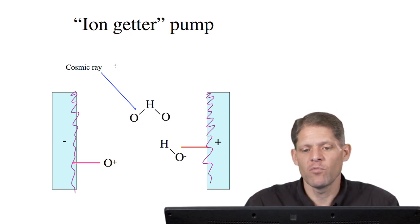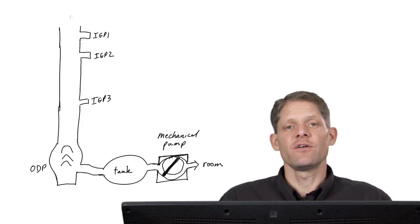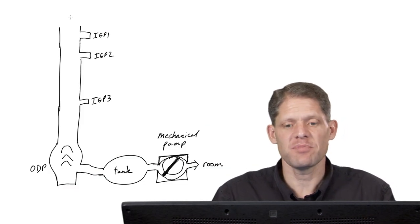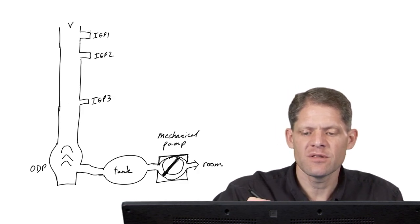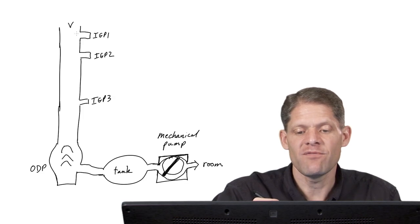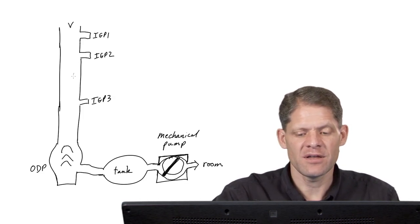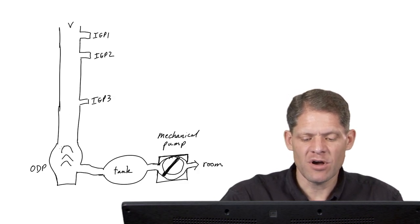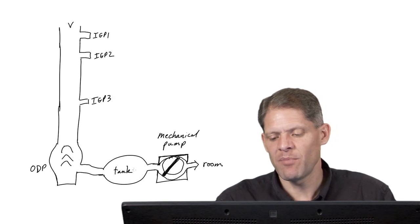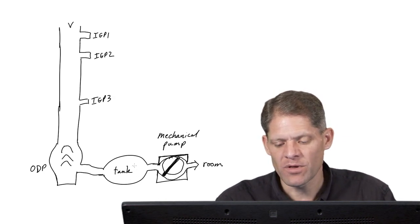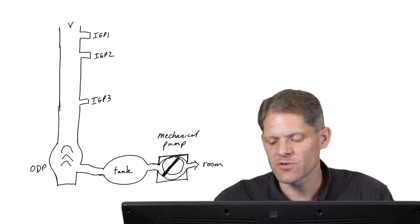The full vacuum system, therefore, is pretty complicated. For instance, in the column, by the filament, there is probably an ion-getter pump evacuating the area just around the gun. There are other ion-getter pumps within the column. At the bottom of the column, there is the oil diffusion pump, and that is backed by the mechanical pump with a storage tank, a buffer tank in between, and the mechanical pump exhaust to the room.